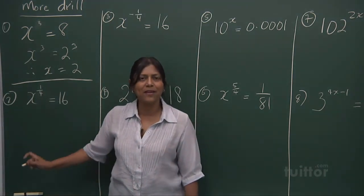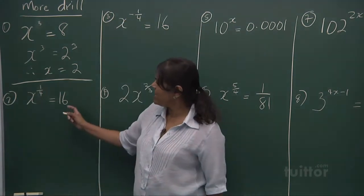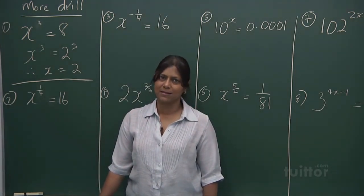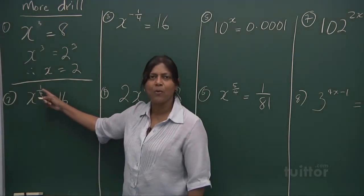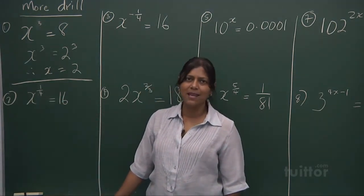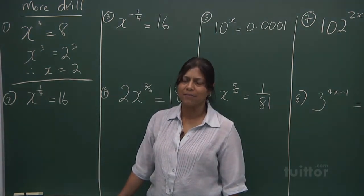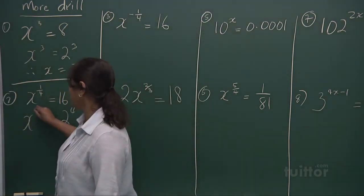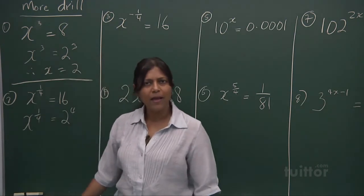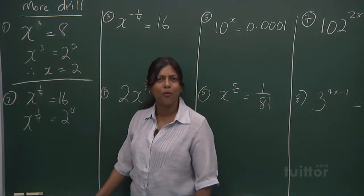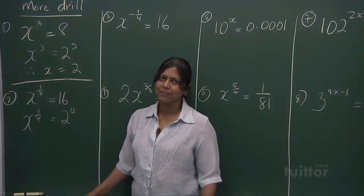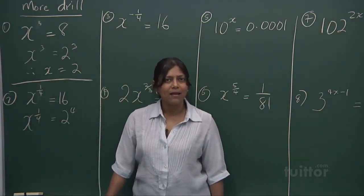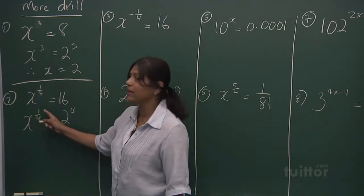Now if you look at the next sum, again we need to create a link. But sometimes there are a few approaches in doing a sum. If I have x to the power of 1 quarter is 16, you know that 16 is 2 to the power of 4. This is 1 over 4, and that's 1 to the power of 4. What do you do next? Well, there is a solution. We can change this power to 1.